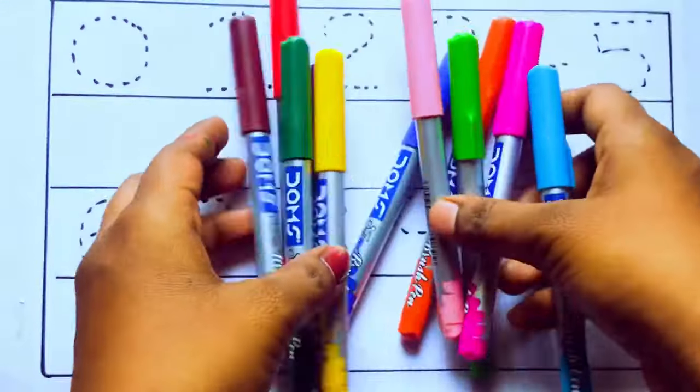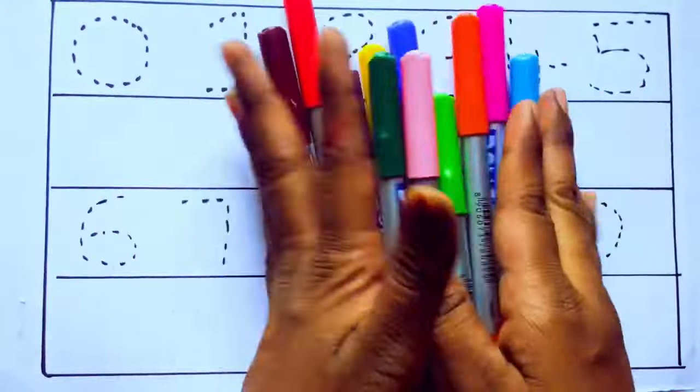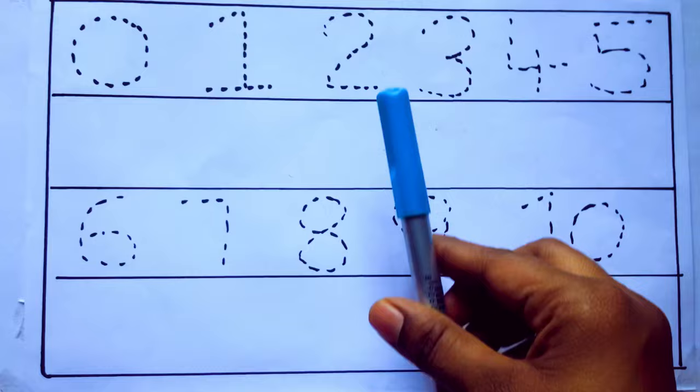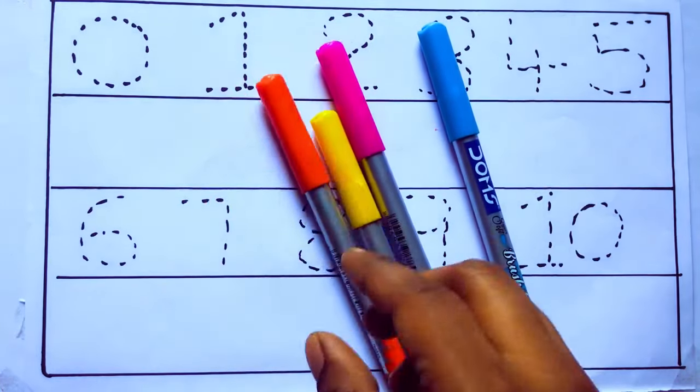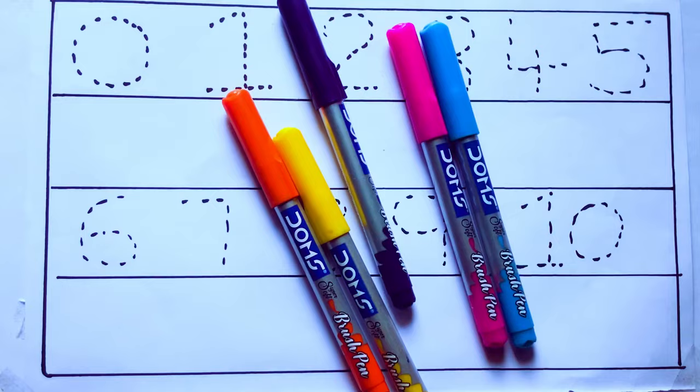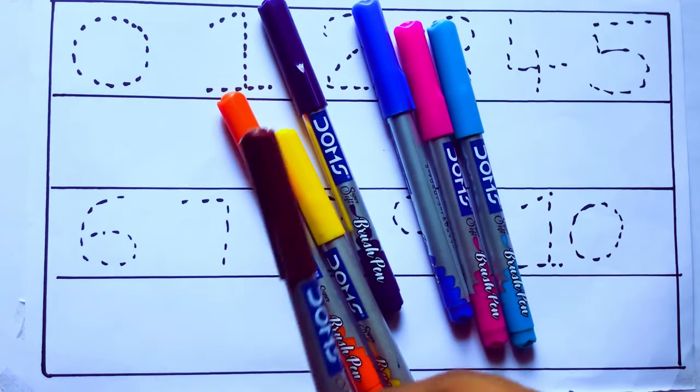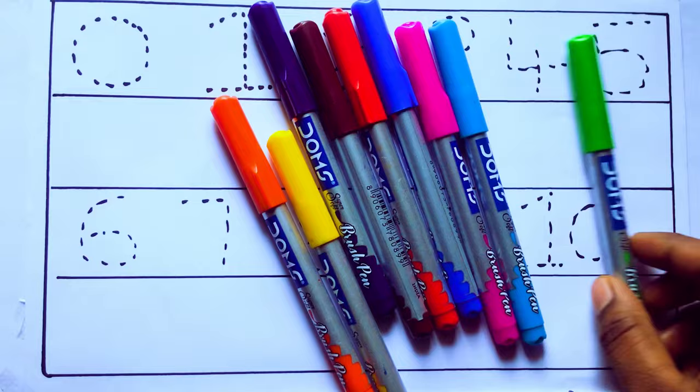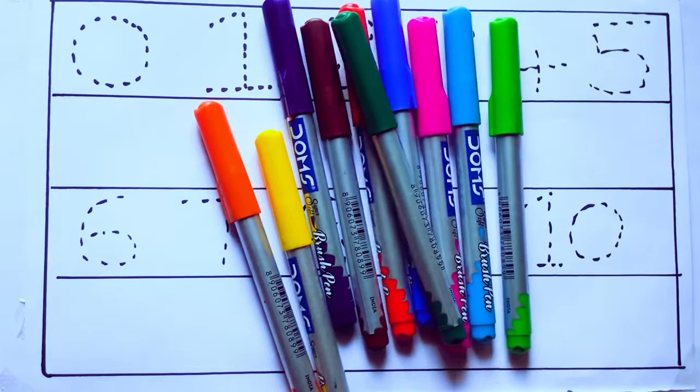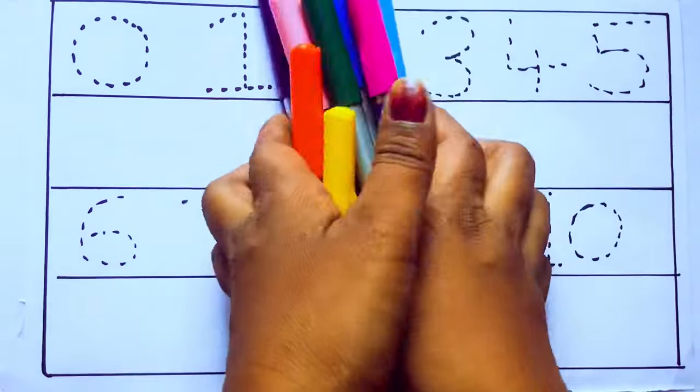Let's learn some colors. These are all the color pencils. Let's learn the names: sky blue color, pink color, yellow color, orange color, violet color, blue color, brown color, red color, green color, and pink color.